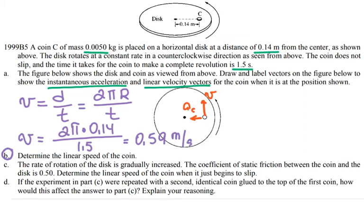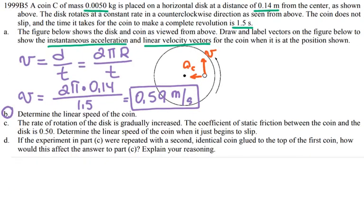For part C, they say the rate of rotation of the disk is gradually increased. The coefficient of static friction between the coin and the disk is 0.5. Determine the linear speed of the coin when it just begins to slip.